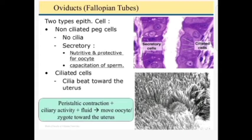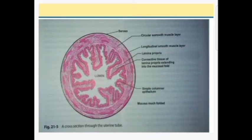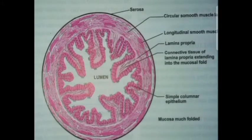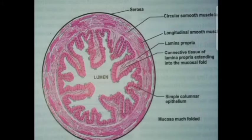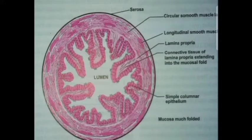It is the peristaltic contraction plus ciliary activity and fluid which moves the oocyte and the zygote towards the uterus. In this diagram showing the cross section of the uterine tube, you can see the serosa, the circular layer of muscles, the longitudinal layer of smooth muscles, the lamina propria, and the lumen. The columnar cells lining the tube are of two types: ciliated and non-ciliated. The non-ciliated cells are called peg cells, which are nutritive and give nourishment to the oocyte.